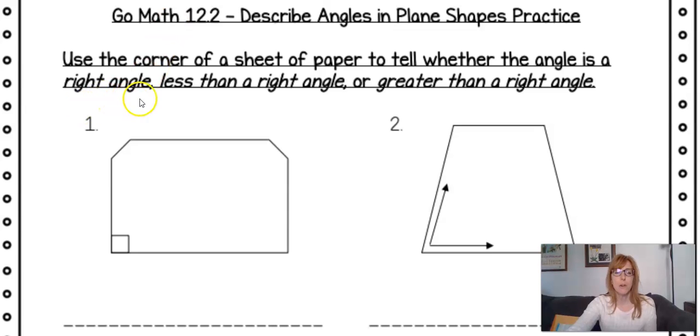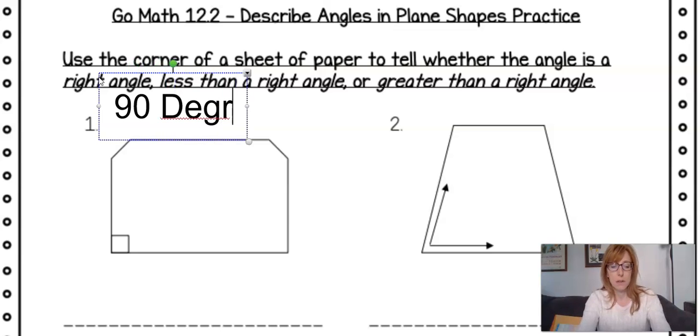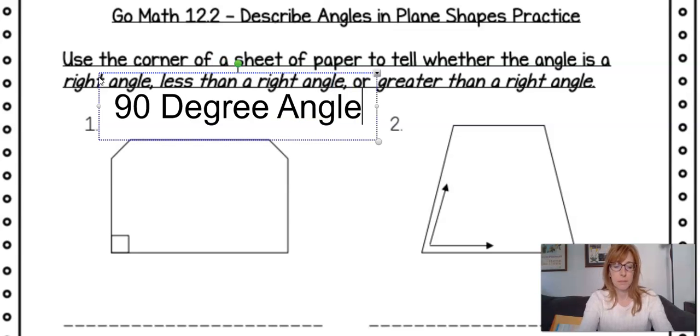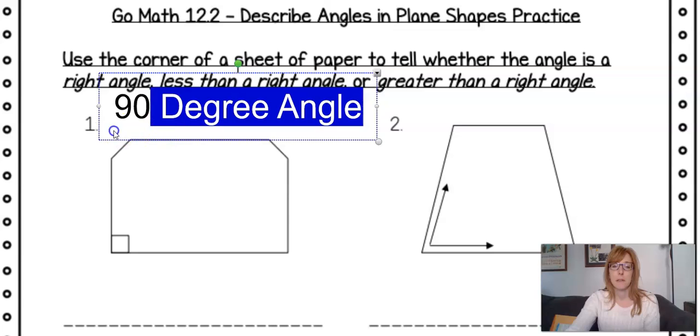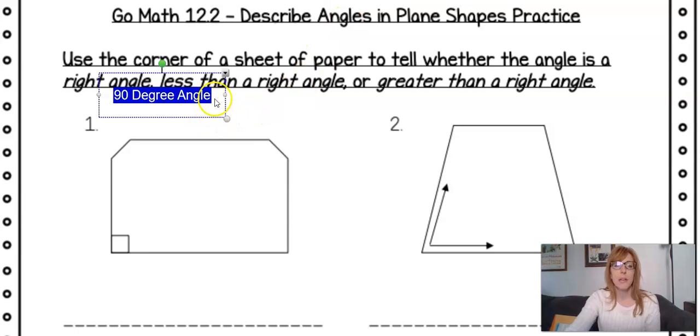Now hopefully you remember that if it is a right angle that would be called a 90 degree angle. Okay so that would be a 90 degree angle.